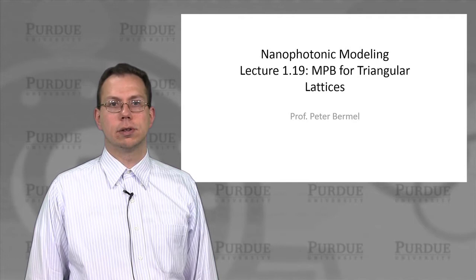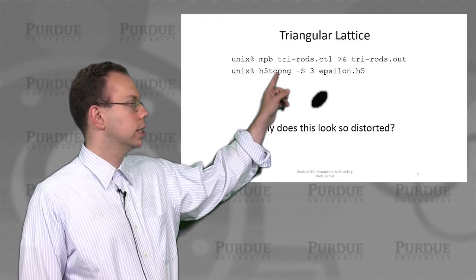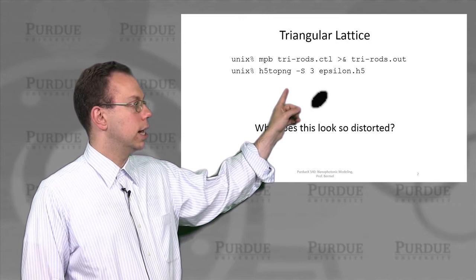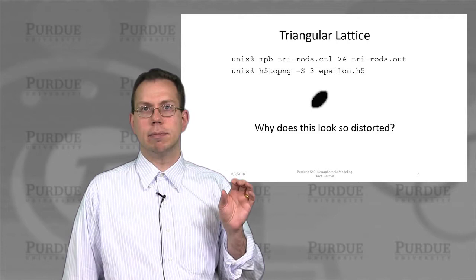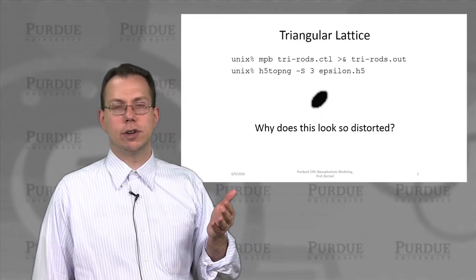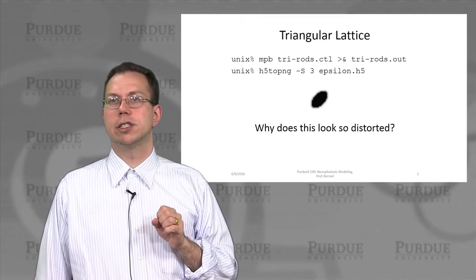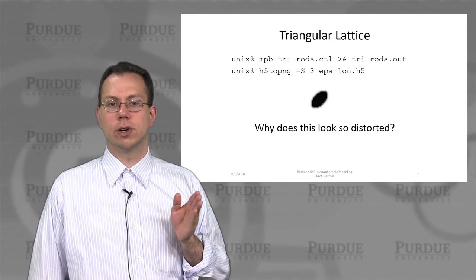And then if we run that kind of calculation, as you can see here using this command line, and then convert the output of the HDF5 file, which is basically a database storing the epsilon as a function of position, and then convert that into an image. Then we actually got something that looks like this, which looks like a very distorted ellipsoid structure. So then the question is why does it look so distorted?